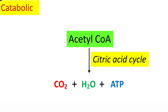Coming to the catabolic function of TCA cycle: when the two-carbon compound acetyl-CoA enters into TCA cycle, it is oxidized. The two carbons of acetyl-CoA are removed in the form of two molecules of carbon dioxide, and during this process energy is also generated. This is the catabolic nature of TCA cycle.